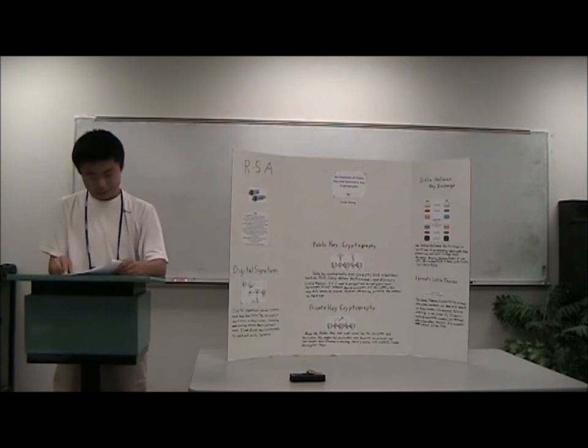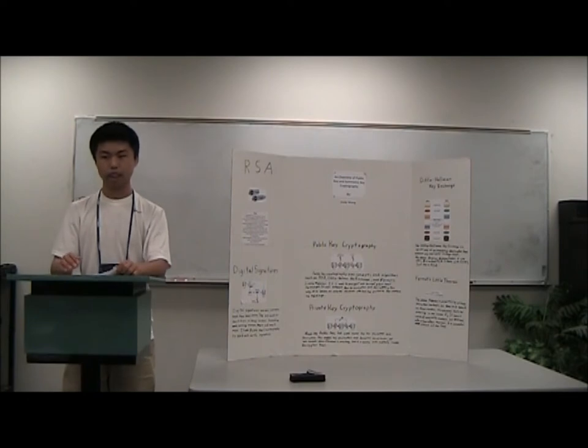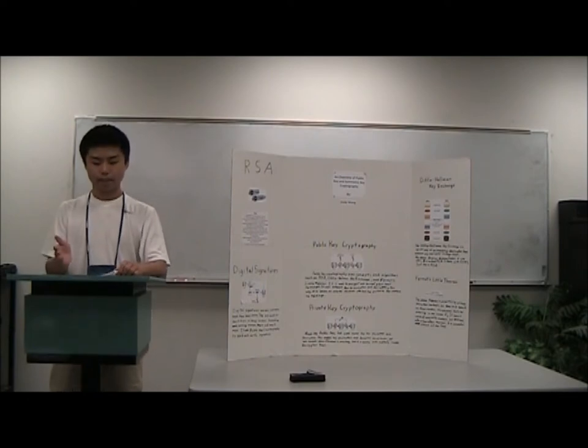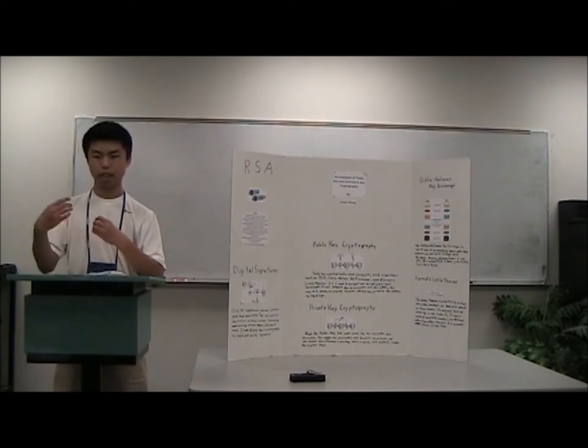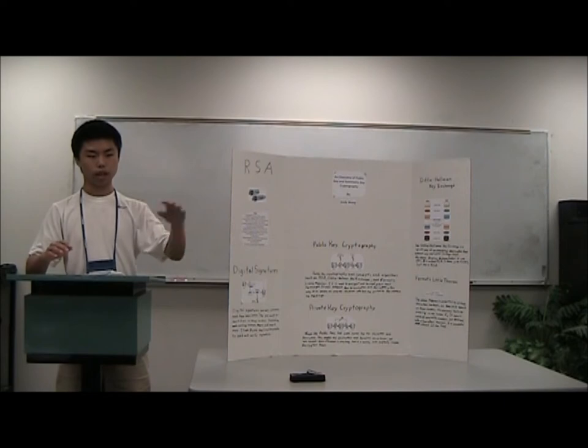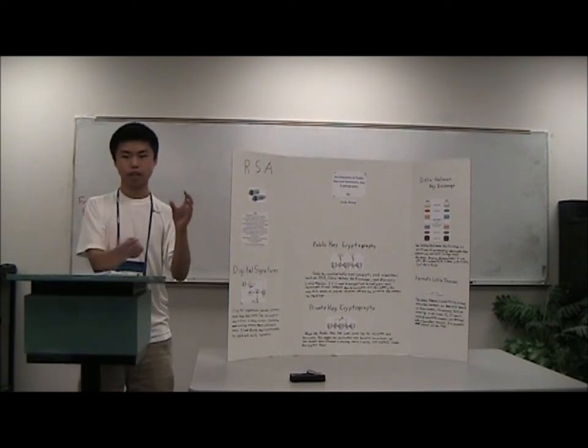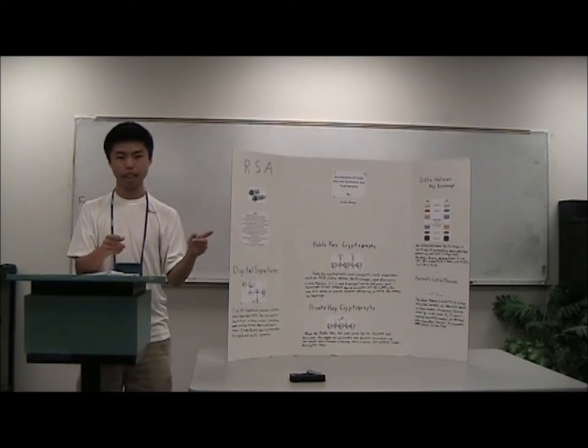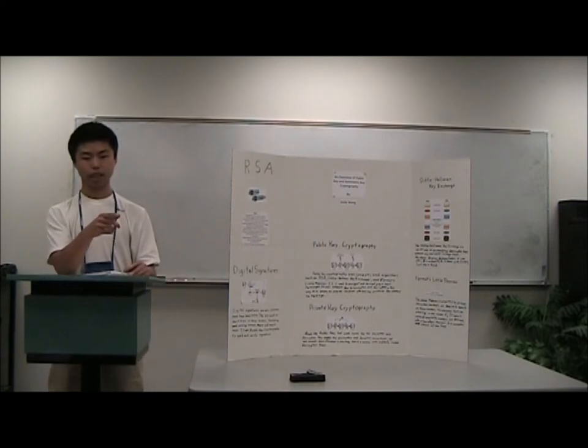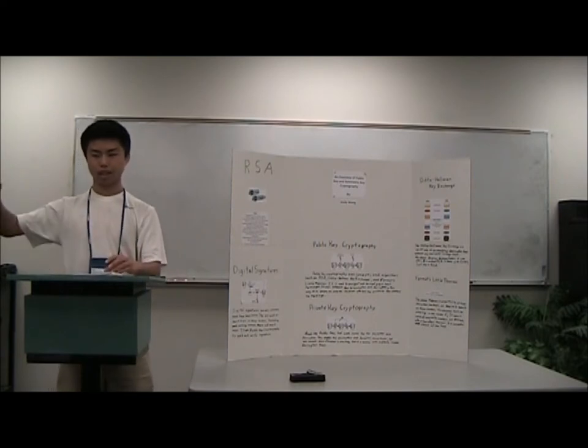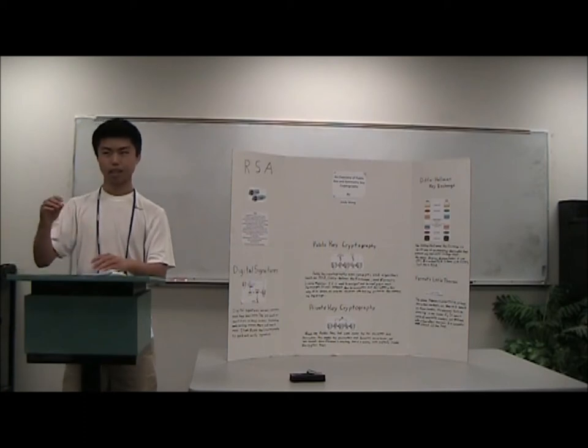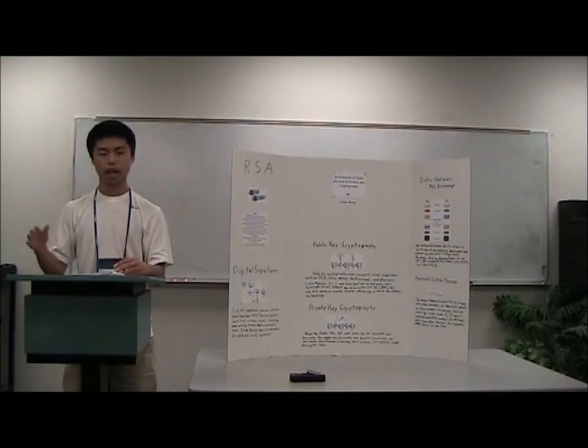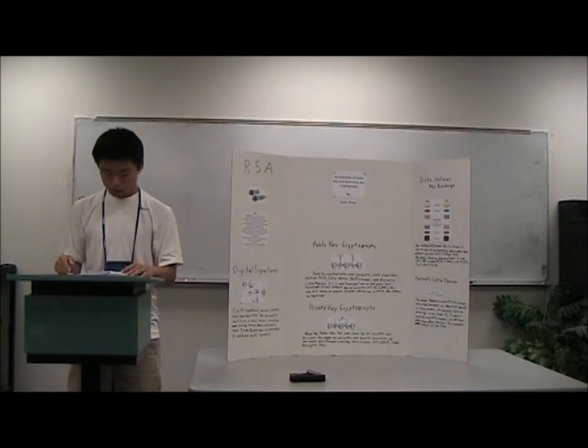So one problem with the Diffie-Hellman key exchange is that if the interceptor can intercept the message, that means he can actually replace the key with his own key. And then the other side will use his replaced key to encrypt their message. And then he can actually read that message, re-encrypt it with the other side's key that he originally got rid of, and then send it back to them. And this way he knows a message without letting either side know that he read the message.